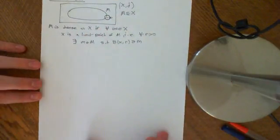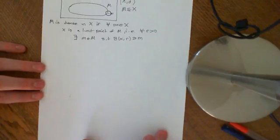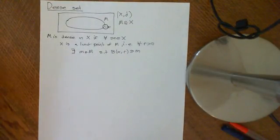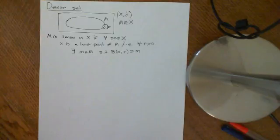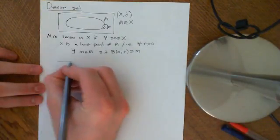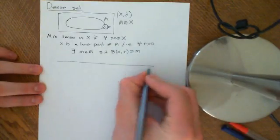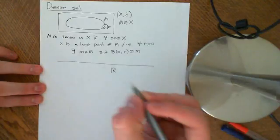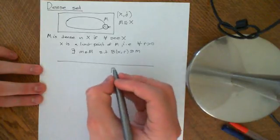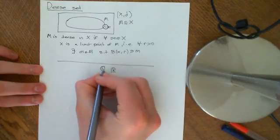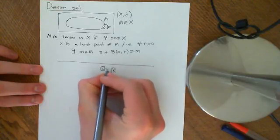The best way of seeing this and understanding it is to see the example. The main example that motivates this entire definition is the real numbers and the rational numbers within them. So let's take the metric space which is the real numbers with the Euclidean metric on them, and a proper subset of the real numbers: the rational numbers.